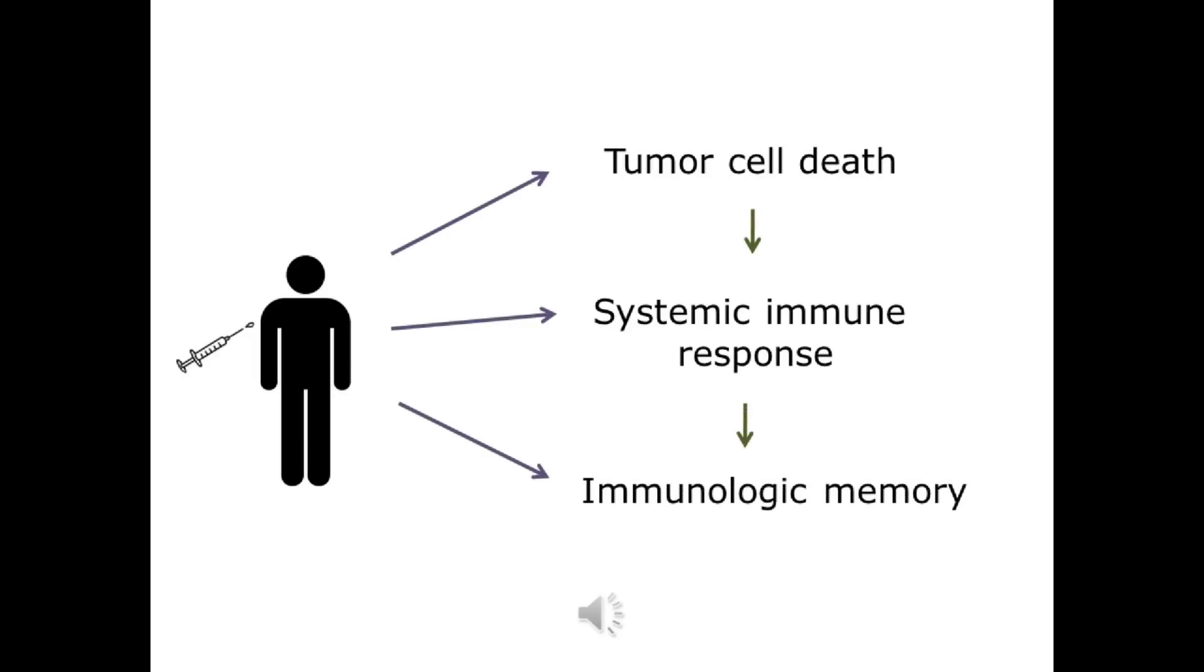Cancer immunotherapy aims at stimulating or modulating key players of the immune system to enable specific killing of tumor cells with minimal damage to healthy non-tumor cells, lead to systemic anti-tumor immune response which can control metastasis, and induce immunological memory which could provide long-term protection against possible future recurrence of tumor.